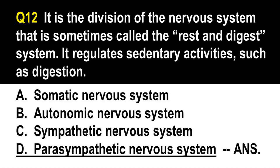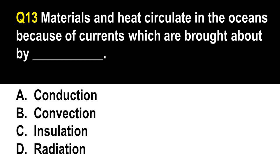Question number 13. Materials and heat circulate in the oceans because of currents which are brought about by: A. Conduction. B. Convection. C. Insulation. D. Radiation. The correct answer is letter B, convection. Conduction is the transfer of heat energy by direct contact. Convection is the type of heat transfer wherein there is movement of heat by the actual motion of matter. Radiation is the transfer of energy with the help of electromagnetic waves.